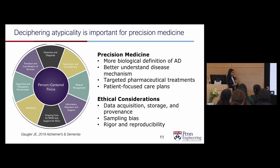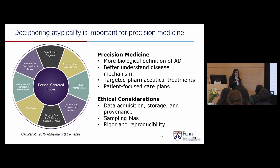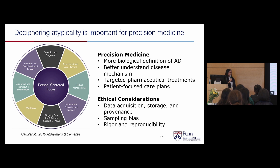Why are we doing this? We heard earlier about precision medicine, and that is really the goal of my work — to inform precision medicine not only for Alzheimer's, but hopefully this framework can be used for other diseases in the future. We want to create a more biological definition of disease and better understand the mechanism so we can treat patients better. We also have ethical considerations around data acquisition, storage, provenance, how we are sampling subjects, whether we're covering everybody equally, and how rigorous and reproducible our science is.